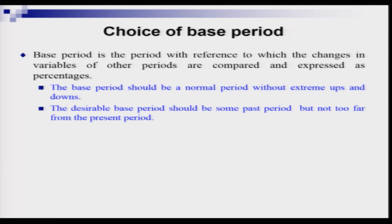For example, the year 2020 should not be taken as a base period because it was terribly hit by the COVID pandemic — that was an abnormal year. The second guideline statisticians put forward is that the desirable base period should be some past period, but not too far from the present period. If you are interested in index numbers for 2021, you should not use a series with a base period of 1990, because over such a long span there is a huge change in the consumer's basket.